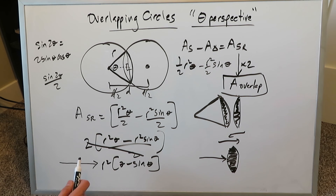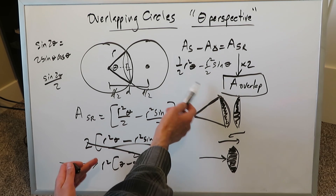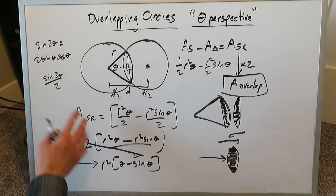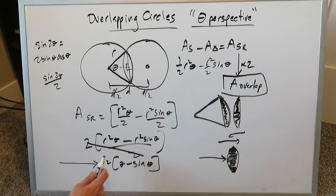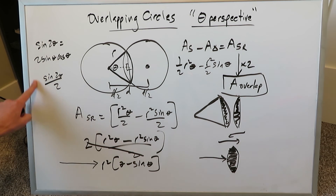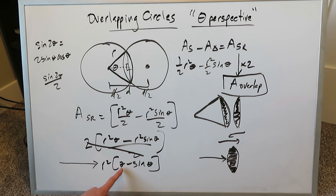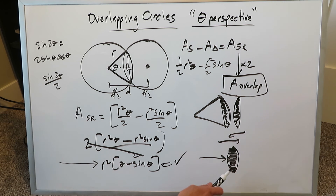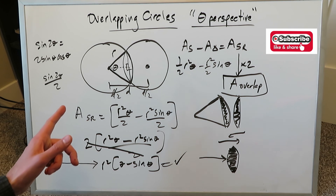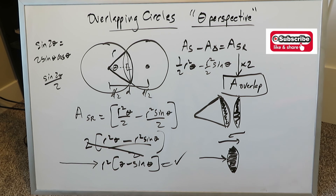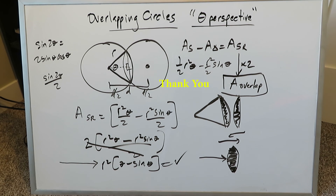The most difficult part of this derivation is finding the area of the triangle, since the sector area r²θ/2 is already known. The triangle calculation requires recognizing the double angle sine identity, incorporating it, and simplifying to reach the final formula. Once you know the radius and theta for your sector, you simply plug those in to get the area of the overlapping region between two circles of equal radius and area. Thank you for watching — this complements the previous video on the distance-based approach.